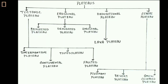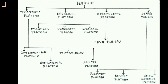According to origin, plateaus are broadly classified into four categories: tectonic plateau, erosional plateau, depositional plateau, and other plateaus. Tectonic plateaus are further classified into intermontane plateau, continental plateau, tilted plateau, and faulted plateau. Erosional plateaus are of three types: dissected plateau, denudated plateau, and uniclinal plateau. Depositional plateaus are also known as lava plateaus. Other plateaus include Piedmont plateau, desert plateau, and snow-covered plateau.